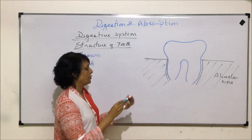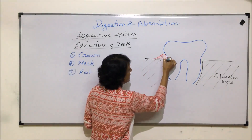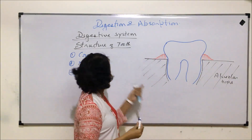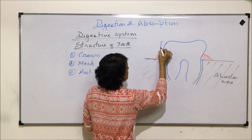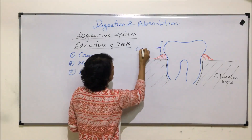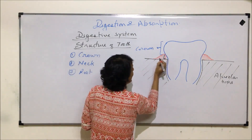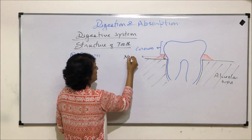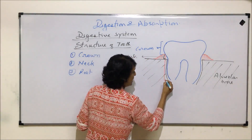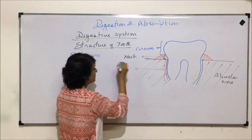Now the part which is visible to us — let me draw the gums here. With the gums drawn, it will be easier to label the three parts. The white part visible to us is called the crown. The part underneath the gums — this small area — is the neck of the tooth. The third part, completely embedded in the bone, is known as the root.